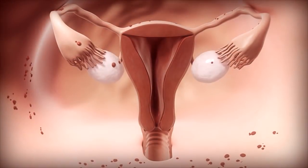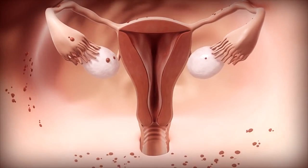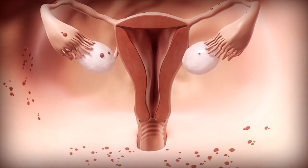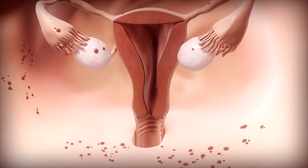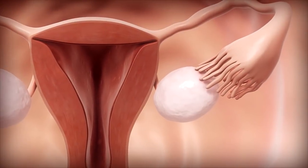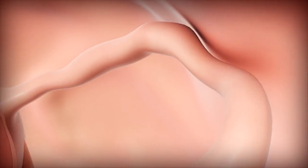In endometriosis, the endometrium grows outside of the uterus. One cause of this growth may be retrograde menstruation. During retrograde menstruation, menstrual fluid flows backward into the fallopian tubes instead of leaving the body through the vagina.